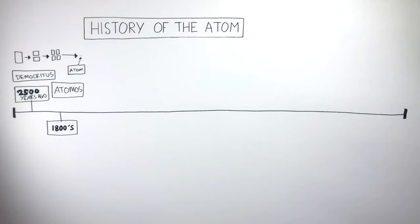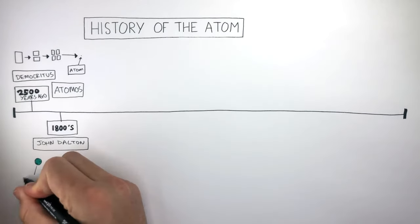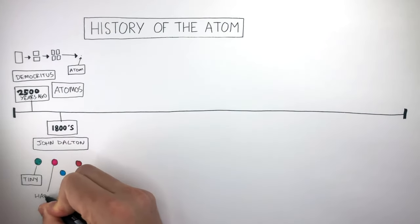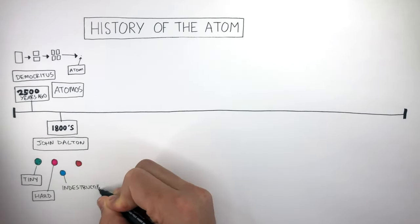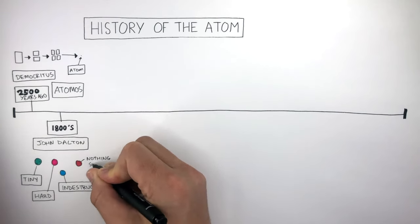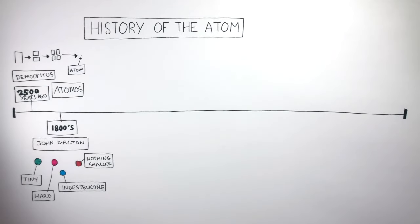In the 1800s there was an English chemist called John Dalton. In his theory of the structure of the atom, he said atoms resembled snooker balls, as they were tiny, hard, indestructible, and there was nothing smaller than the atom. But we know this is wrong because atoms are made of protons, neutrons and electrons.